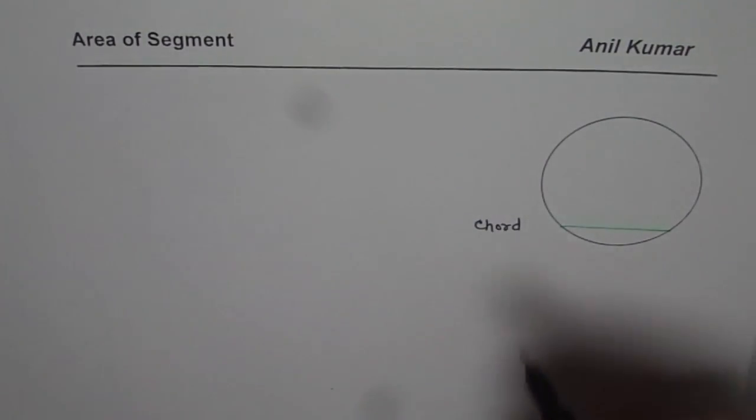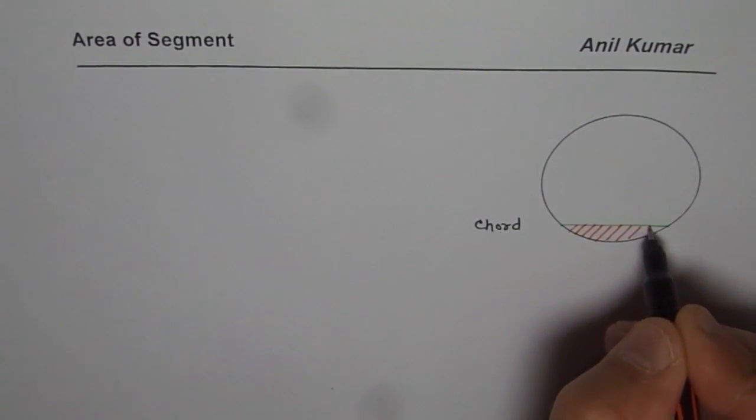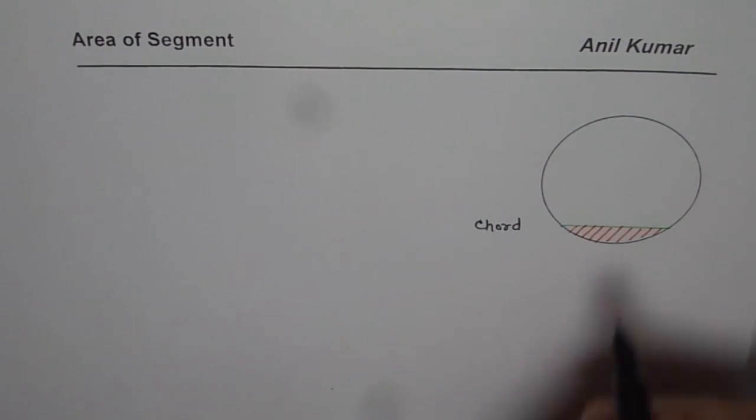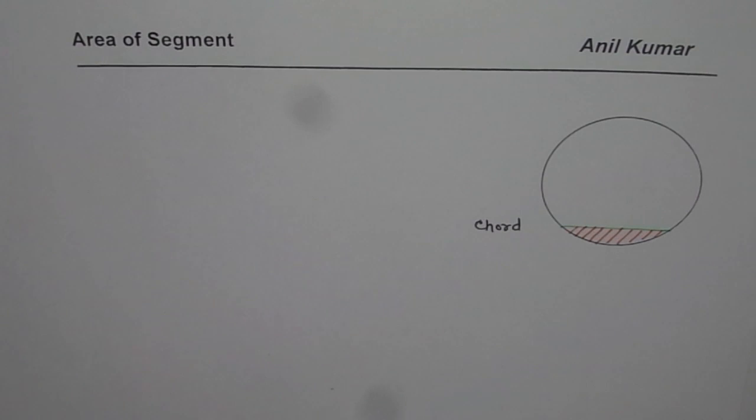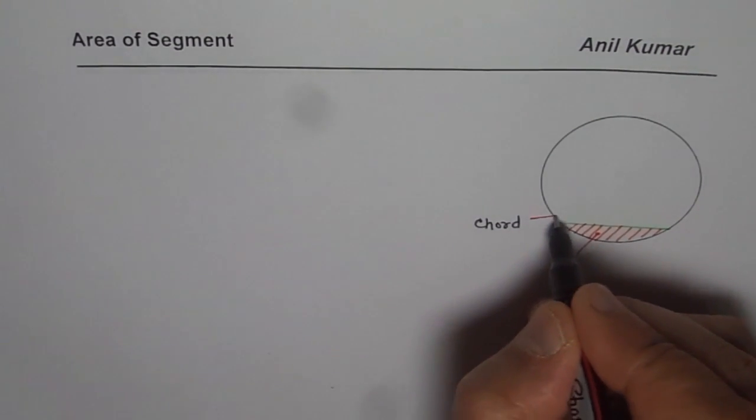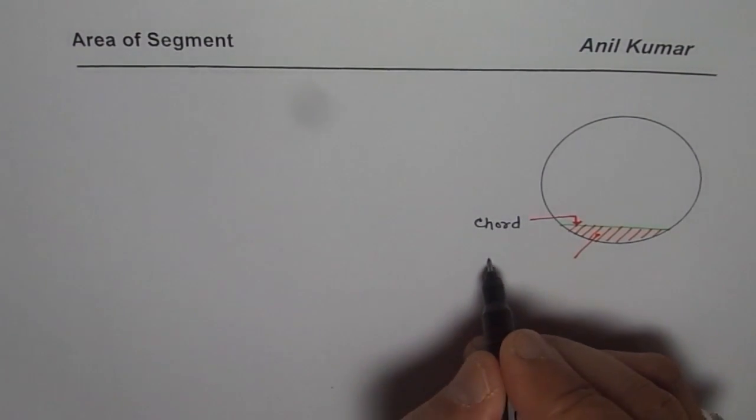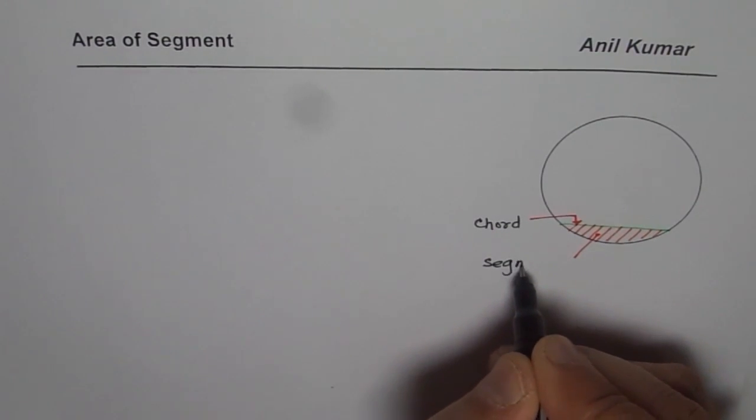Now, the area which is enclosed between the chord and the circumference of the circle is called the segment. So this portion here, the chord is this line, and the segment is the shaded portion. So that is called the segment.